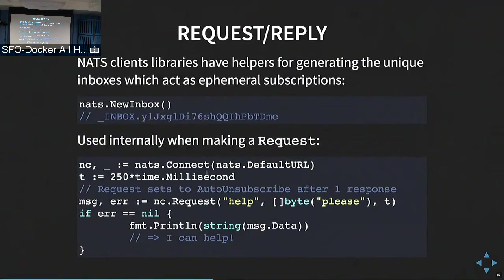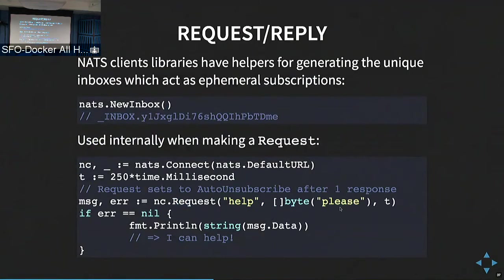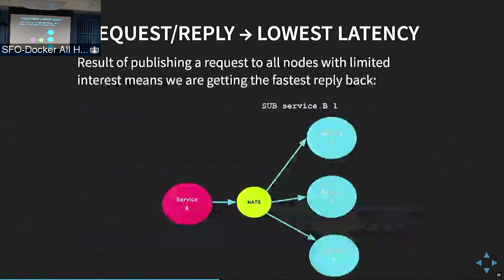This is the API from the Go client — you can request, send the payload bytes (the payload is opaque to the server, so it could be bytes, JSON, protocol buffers, etc.), and it's a basic request-response. By the definition of request-response in NATS, the response you get is the one with the lowest latency. So if you have a service making a publish on a subject, the fastest one to reply is going to be received by the client — very well suited for lowest-latency type communications.